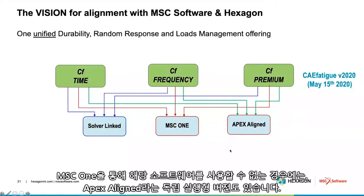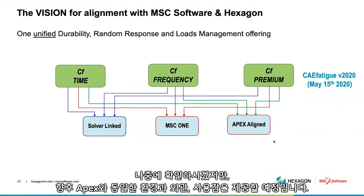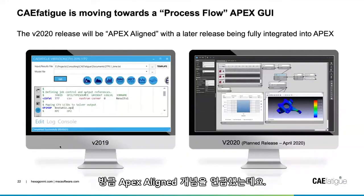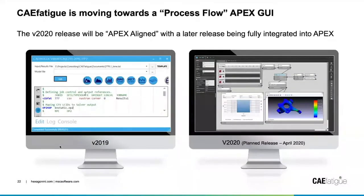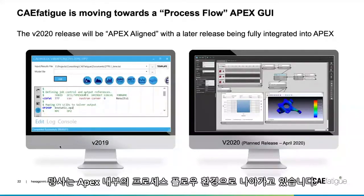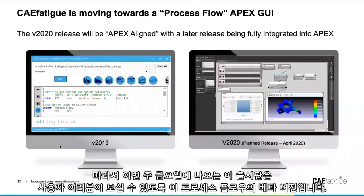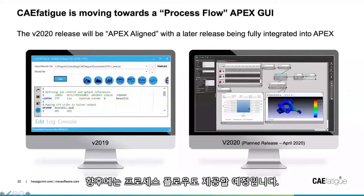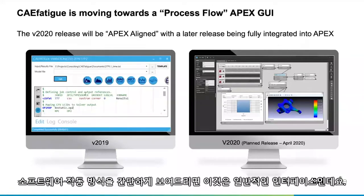We're giving the standalone version the same environment and look and feel as APEX. Into the future, we'll also be offering exactly the same technology through a solver-linked mechanism. I mentioned the APEX Aligned concept — we are moving towards a process flow environment inside APEX. In this current release coming out this Friday, we will have a beta version of this process flow for people to have a look at. It takes us away a little from the way we used to work using only control file mechanisms, and in the future we'll offer this process flow as well. Just a little teaser — I'll show you that shortly.